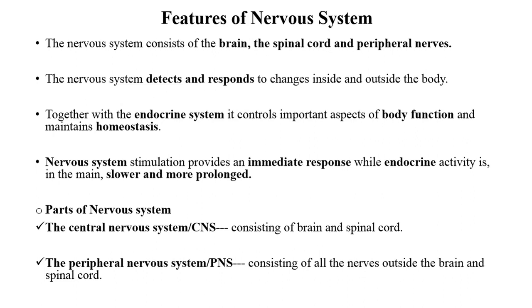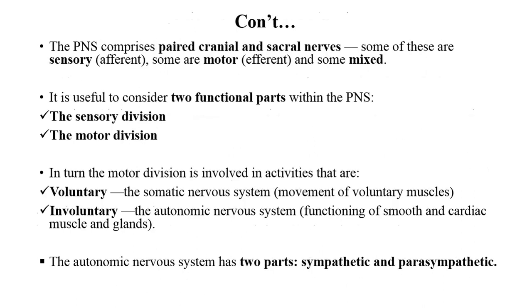The central nervous system consists of the brain and spinal cord, while the peripheral nervous system consists of all of the nerves outside of the brain and spinal cord. The peripheral nervous system consists of cranial nerves and spinal nerves, and some are sensory and some are motor nerves.